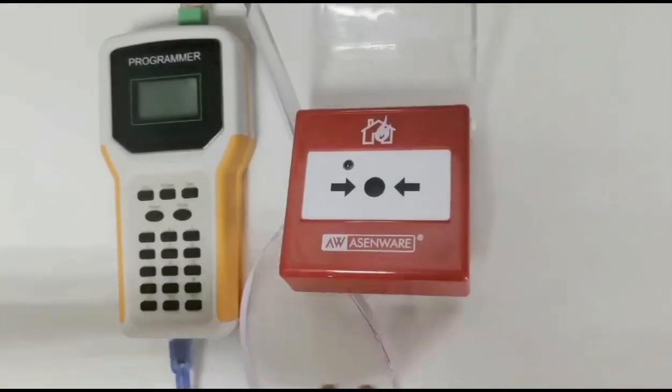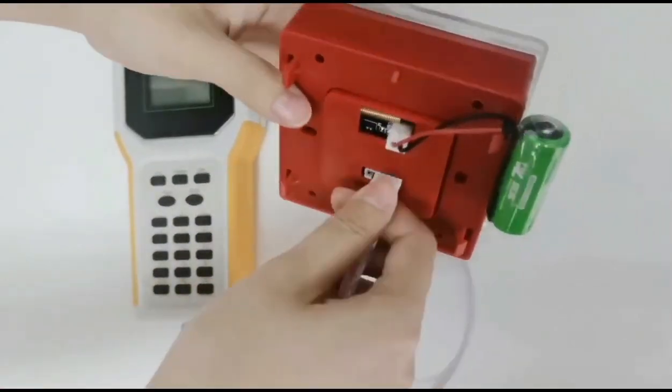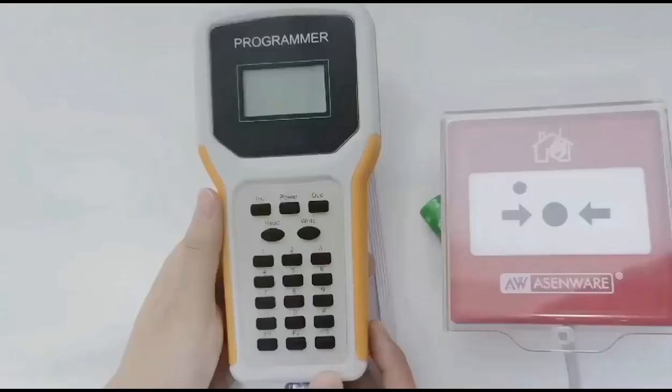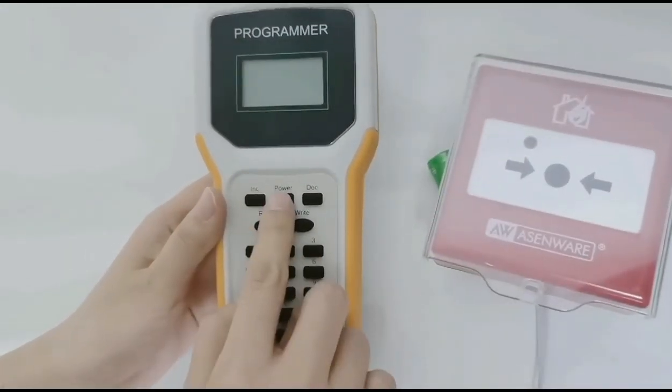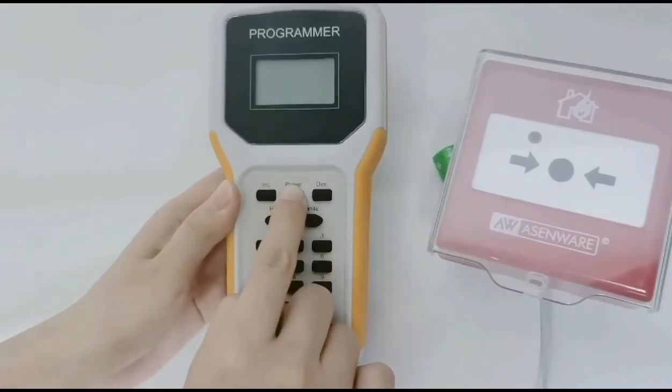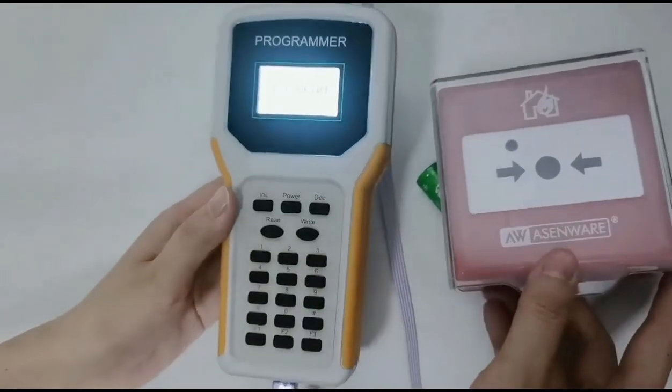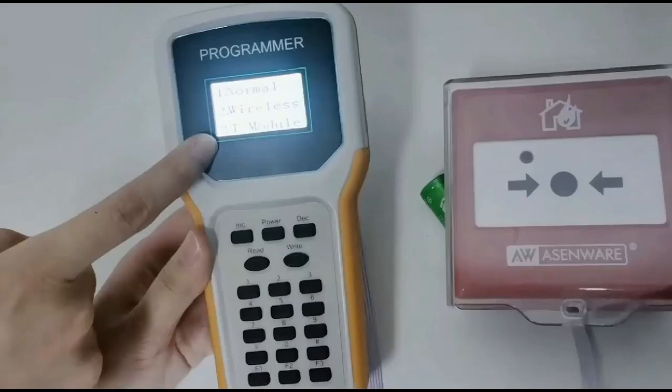Now we'll show you how to code for a wireless manual call point. First, we need to press the power button for a second. We choose number two for wireless.